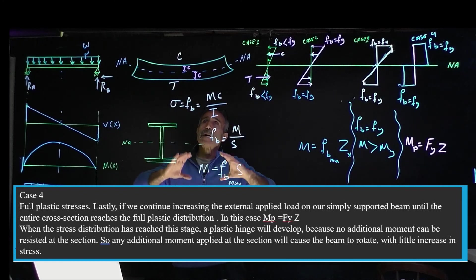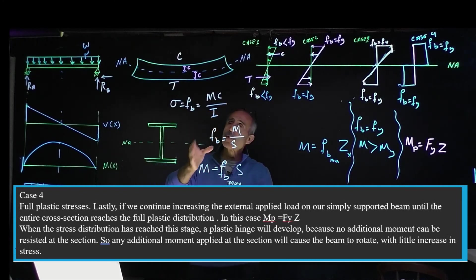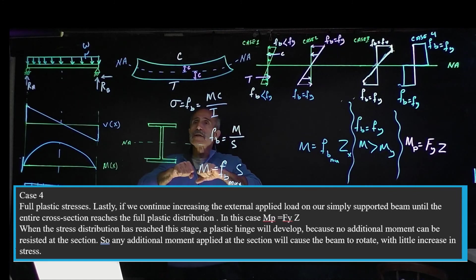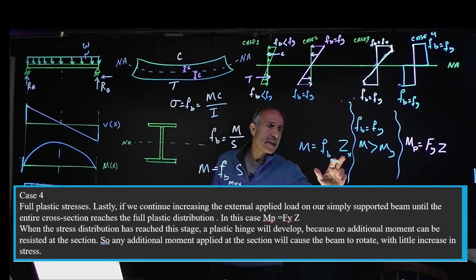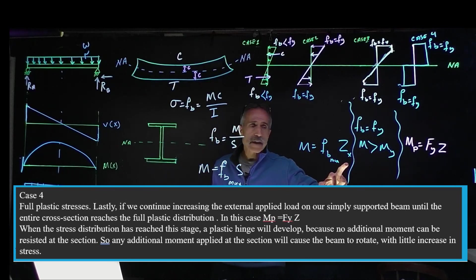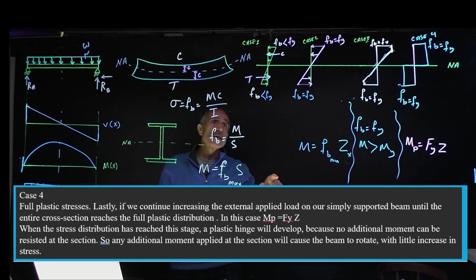When you get to this point, the beam at a certain section no longer can resist the moment, and it can basically twist with a little additional load. That's what we call a plastic hinge. Later on in another example, we will talk about how to calculate the plastic section modulus. Watch for the next video. Hope you liked it, give me a thumbs up.